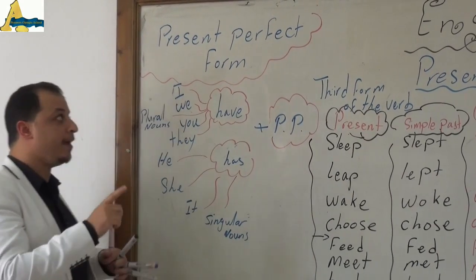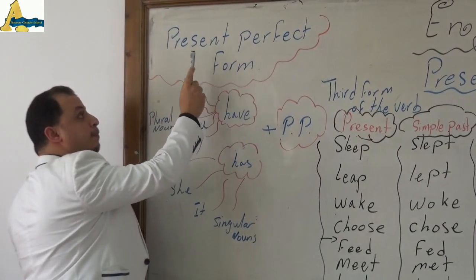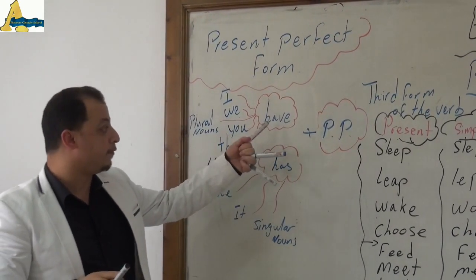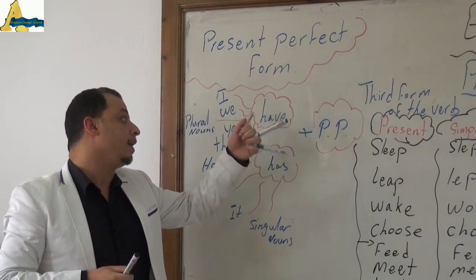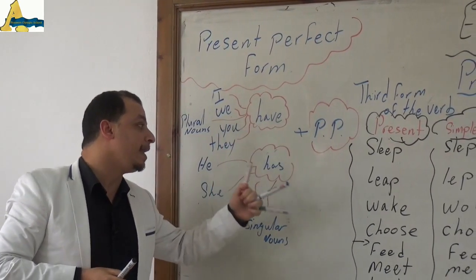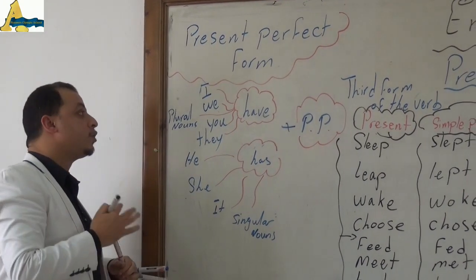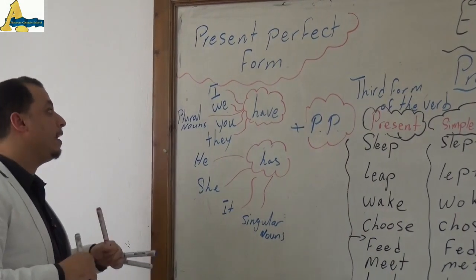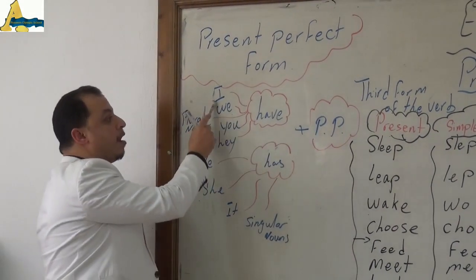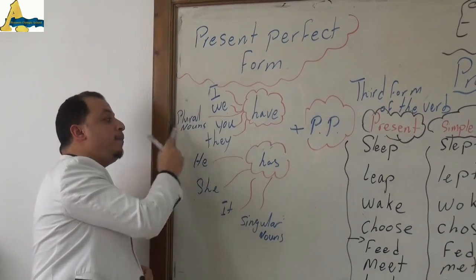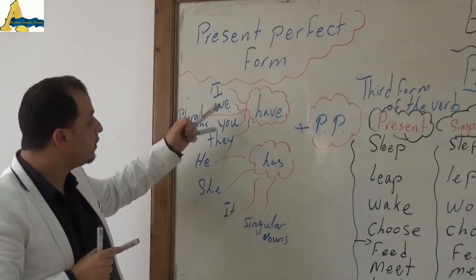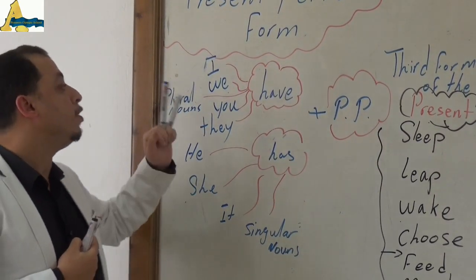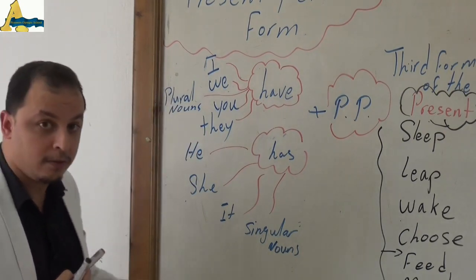The first part that we have to know is the Present Perfect form. The Present Perfect form consists of 'have' and 'has' plus the past participle. Let's try to remember what 'have' and 'has' are used with. 'Have' is used with I, we, you, they, and plural nouns.